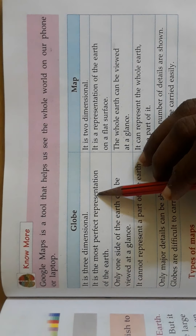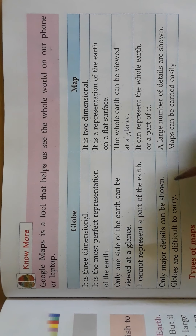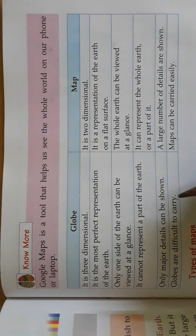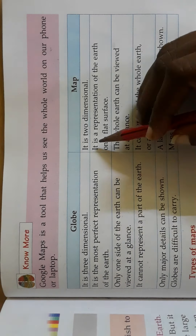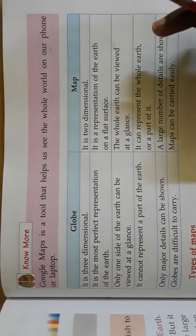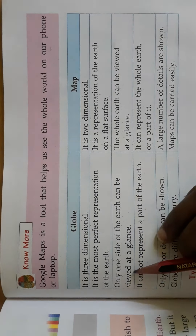The globe is a more perfect and accurate representation of the earth. But the map is a representation of the earth on a flat surface — it is written on flat paper or cloth.